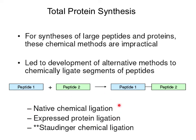The types of methods I'll talk about in this lecture are native chemical ligation, expressed protein ligation, as well as Staudinger chemical ligation.